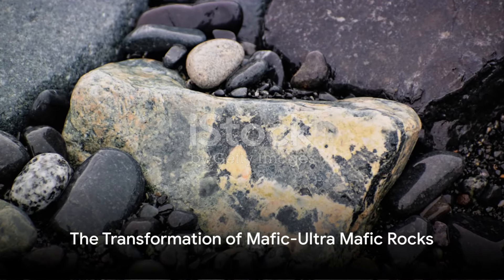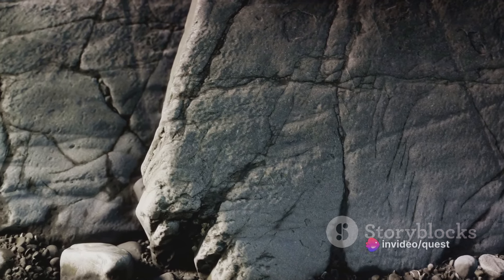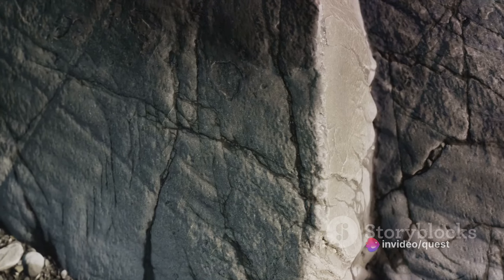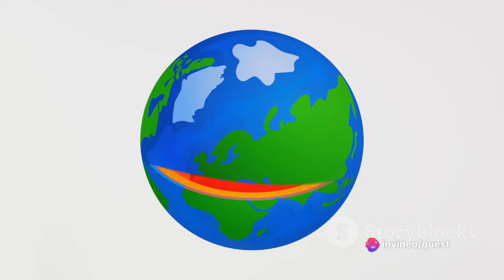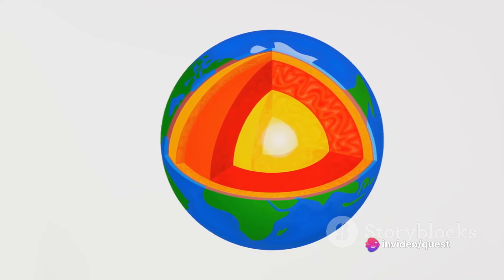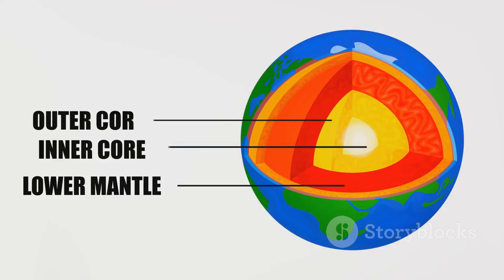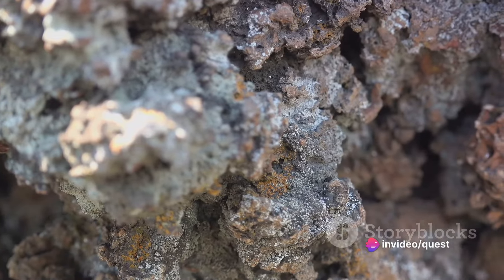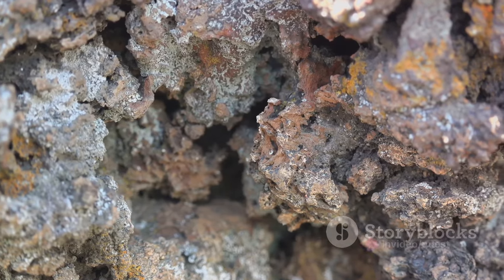Moving on, we delve into the metamorphism of mafic and ultramafic rocks — the dark, dense, mineral-rich rocks. These are the silent witnesses of the Earth's most tumultuous events, their formation and transformation forever tied to the planet's ceaseless tectonic activity. Mafic and ultramafic rocks are born from the Earth's mantle, rich in magnesium and iron — hence the name mafic from magnesia and ferric. Rocks such as basalt and gabbro come to life in the intense heat and pressure of the mantle, often spewed out by volcanoes or forged in the deep oceanic crust.